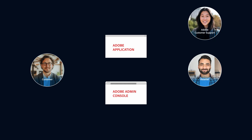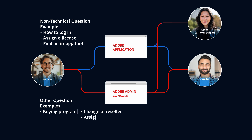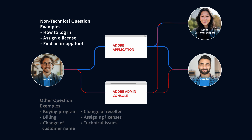Customer support questions can be split into two categories: non-technical questions and, for the purposes of this video, other. Non-technical questions can be asked through the Adobe application or sent through the Adobe Admin Console, and can be answered by either the reseller or Adobe customer support. Some examples of non-technical questions are how to log in, assigning licenses, or how to find a tool in an Adobe app.